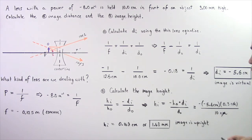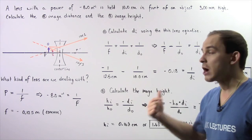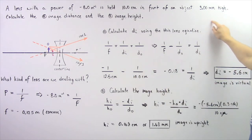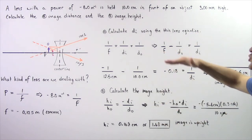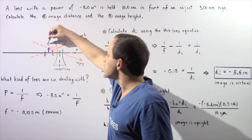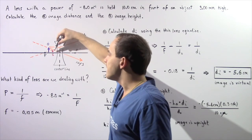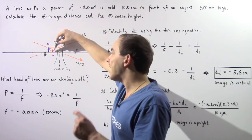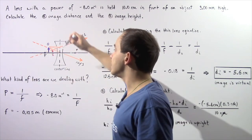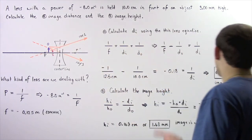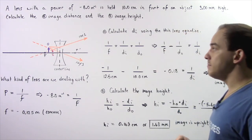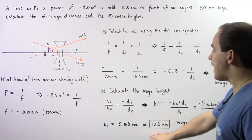The image is upright. Whenever the image height is positive, the image is upright; whenever it is negative, the image is upside down. Notice that our initial object height is 3 millimeters and our image is smaller at 1.68 millimeters. Using the ray diagram, the purple arrow represents the object O and the red arrow represents the image I. The image is found on the left side of the lens, confirming a negative image distance as found in part A, and the image is upright with a positive image height as found in part B.